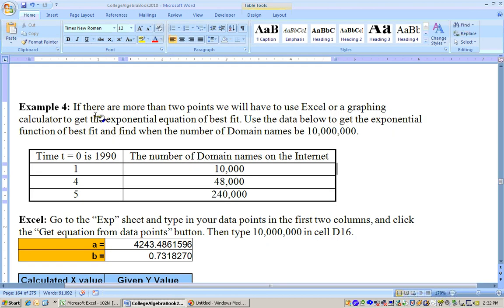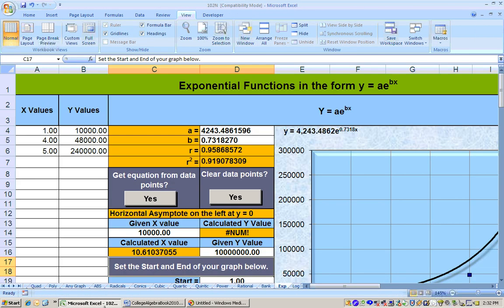On this problem, it says if there are more than two points, we're going to have to use Excel or a graphing calculator to get the exponential function of best fit. It says use the data below to find out when the number of Internet domain names will be 10 million. So we have some data here, and we're assuming we're going to get the exponential curve of best fit. I copied and pasted this data for the number of years after 1990 and the number of domain names into the Excel sheet. I have that data in there, click the button, and I get the exponential equation of best fit.